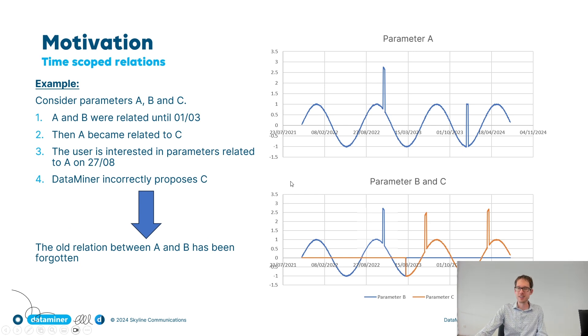Ideally, you would have the algorithm replying that parameter A is related to parameter C and that that's the one you should look at. Time-scoped relation can help you out here. Another example: again, consider three parameters, A, B, and C. And this time assume that A and B were related but only up until the 15th of March. And then parameter C took over. Now assume that the user is interested in parameters related to parameter A on the 27th of August.